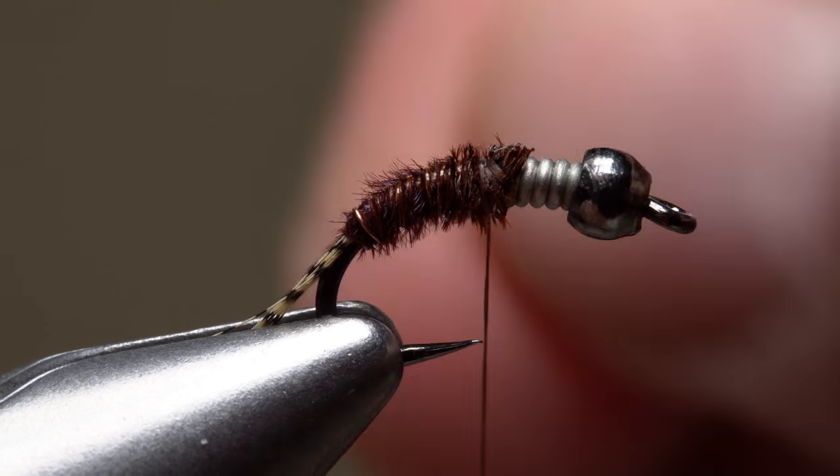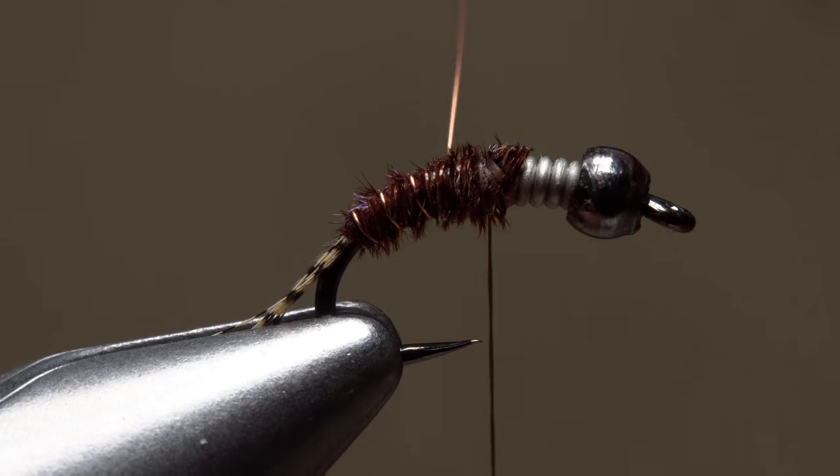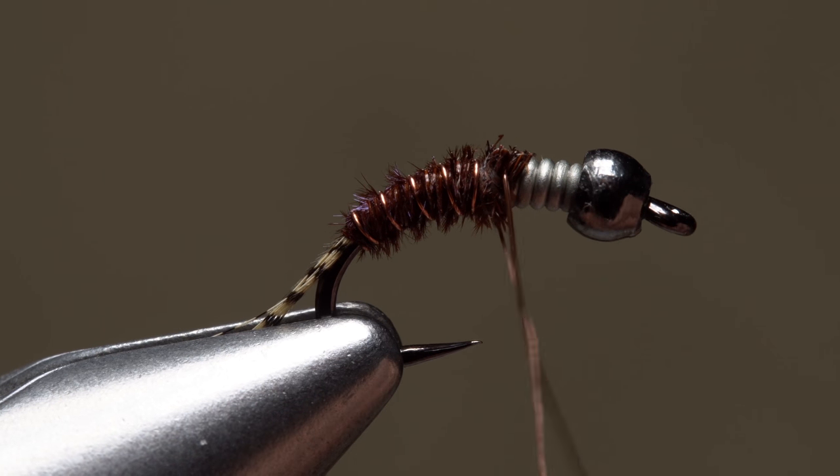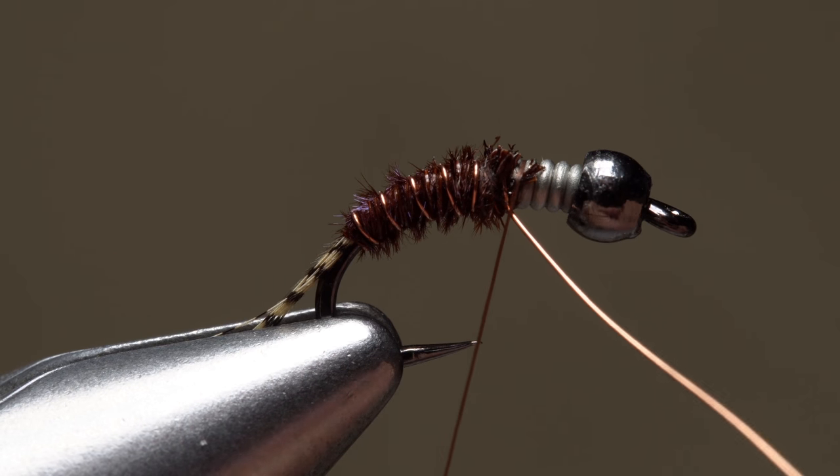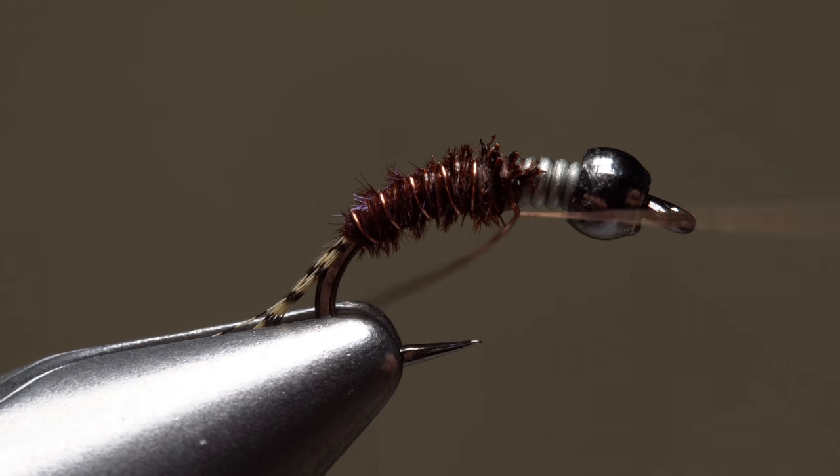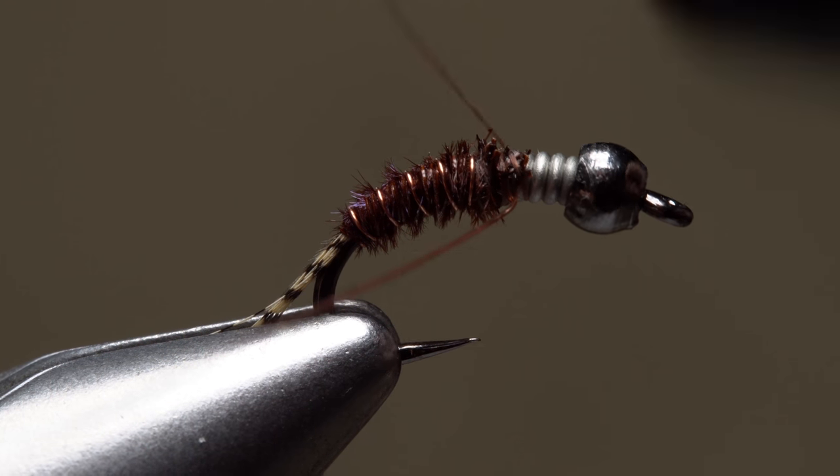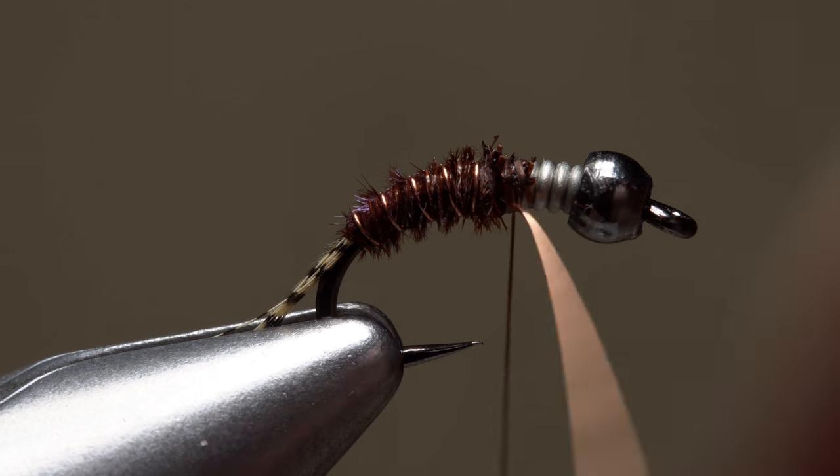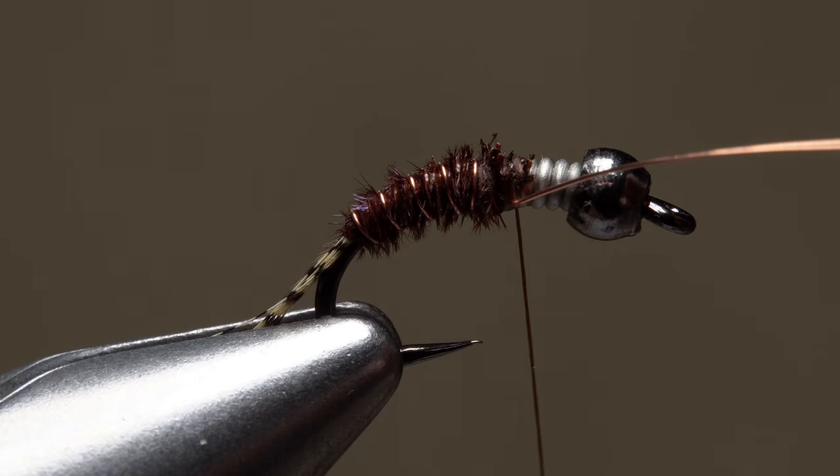Use the copper wire to make open spiral counter wraps over top of the pheasant tail. When you reach your tying thread, go around the wire with it to reverse the direction of your thread wraps. This will ensure the wire gets bound down really well. With the wire secure, use it once again to change the direction of thread wrap back to normal. You can then helicopter the wire to break it off close.